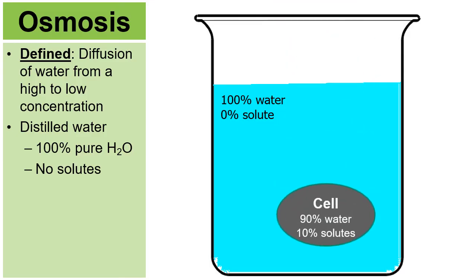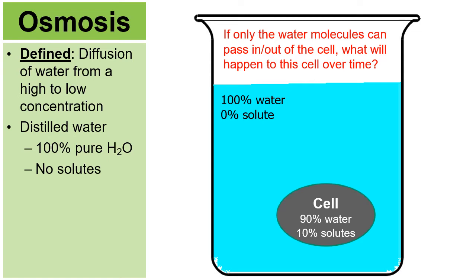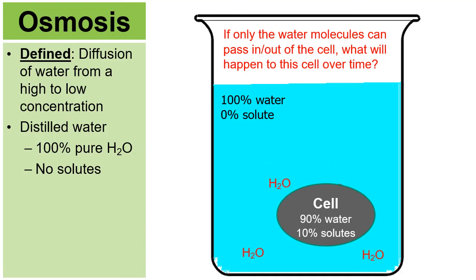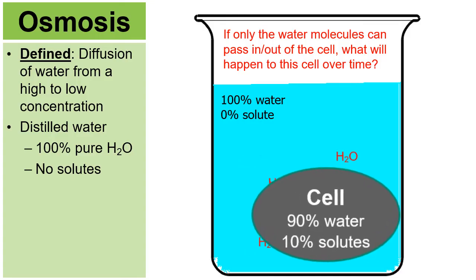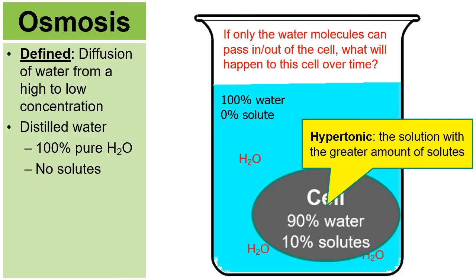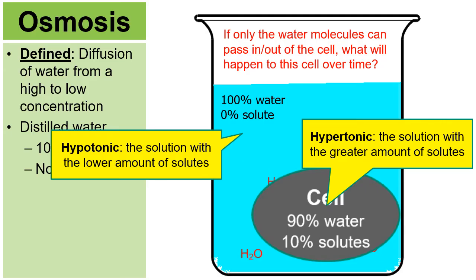Imagine placing a cell into distilled water. The cell has 90% water and 10% solutes. If only water molecules can pass in and out of the cell, through osmosis water will go from a high concentration of 100% to a lower concentration of 90% and diffuse into the cell, causing it to swell. The solution inside the cell is hypertonic — it has a greater amount of solutes (10% vs. 0%). The solution outside is called hypotonic — a solution with a lower amount of solutes.